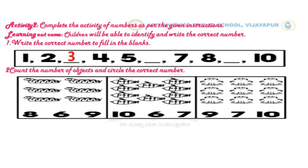The second instruction is: count the number of objects and circle the correct number. Here, in the first group, there are snakes. We will count them: 1, 2, 3, 4, 5, 6. The total number of snakes is 6. Below the snakes, we can see there are 3 numbers — number 8, number 6, and number 9. The correct number is 6; you have to circle it.